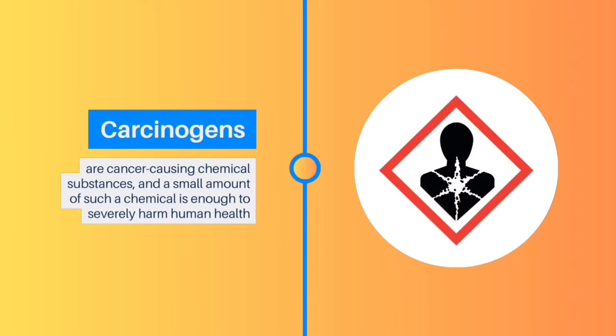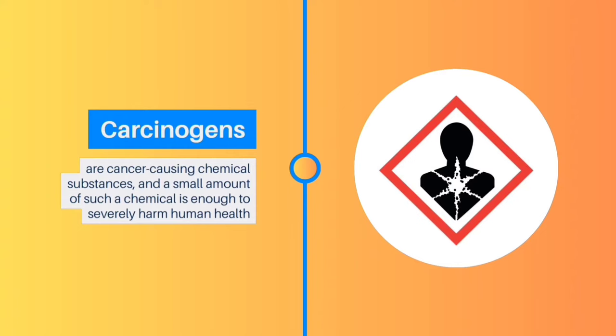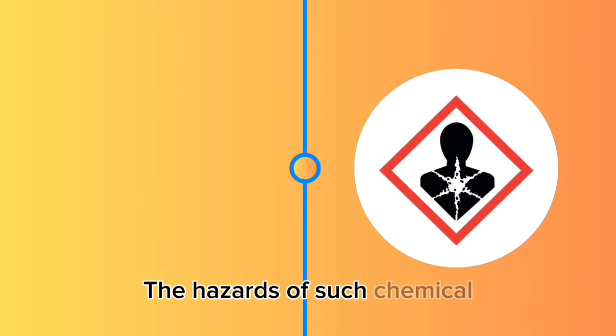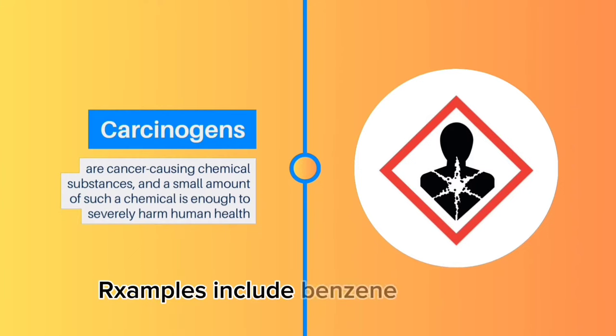Carcinogens: Carcinogens are cancer-causing chemical substances, and a small amount of such a chemical is enough to severely harm human health. The hazards of such chemical substances will only appear years after exposure. Examples include benzene, cadmium, formaldehyde, and vinyl chloride.